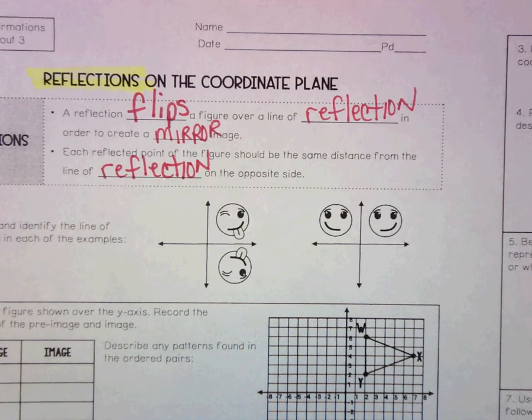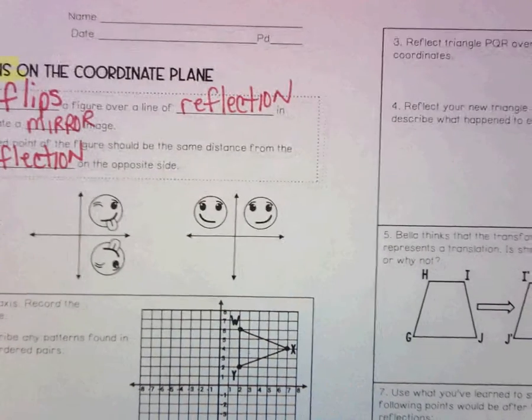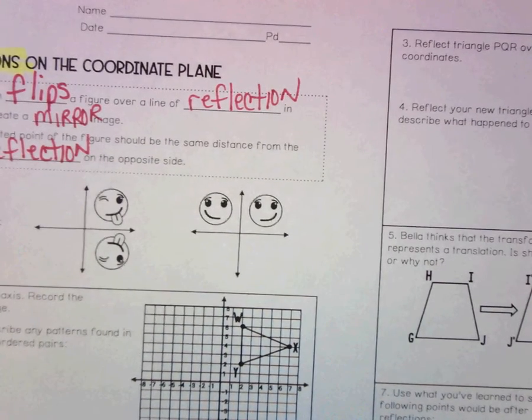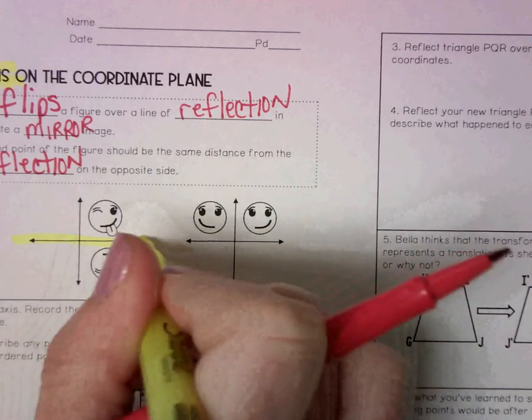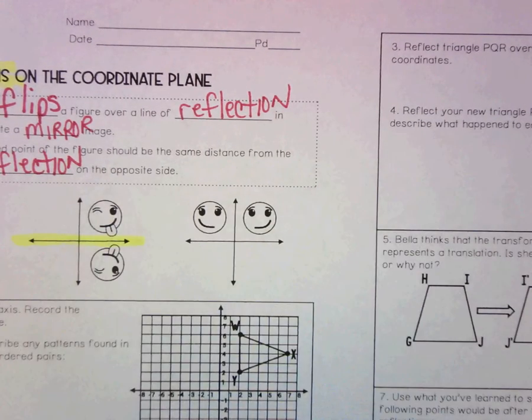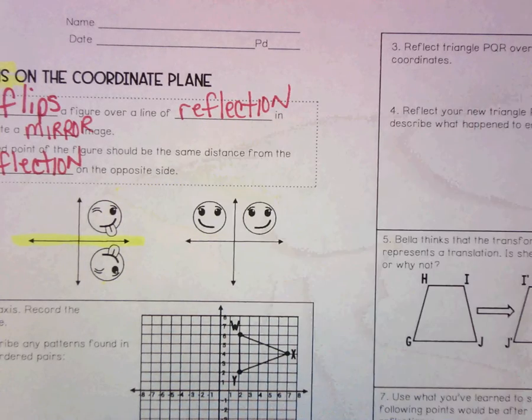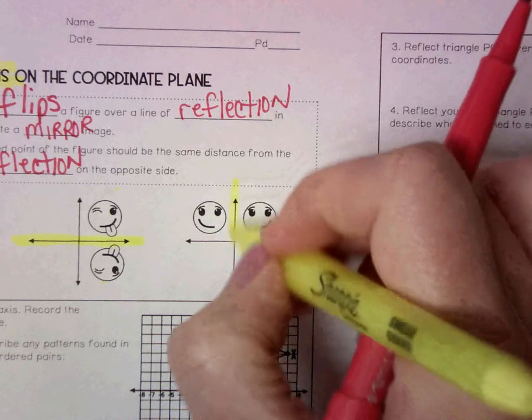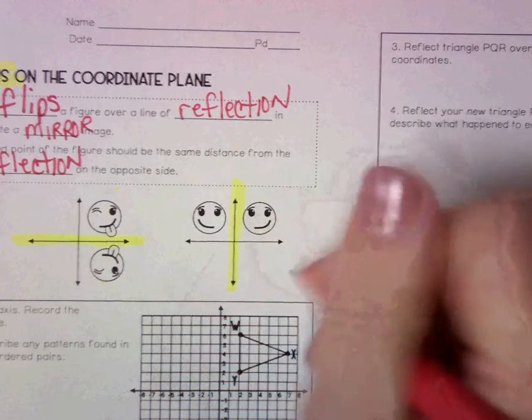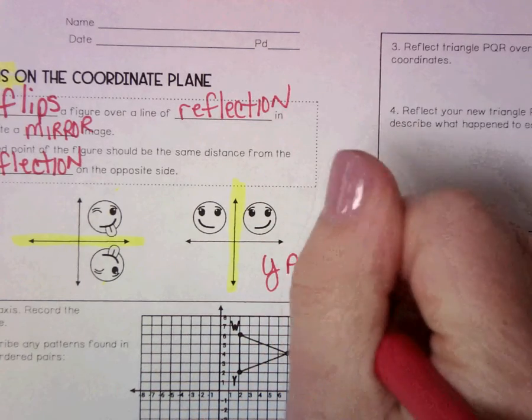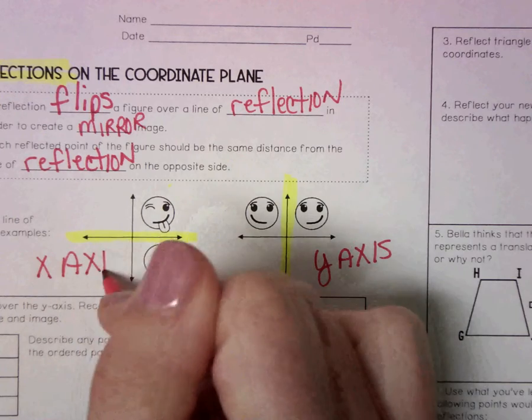Looking at these two pictures, it wants us to highlight and identify the line of reflection. What axis are we reflecting over? Hopefully it's really easy for you to see that we're reflecting here over the x-axis. This is the mirror image. And then on the second one, we're reflecting it over the y-axis.